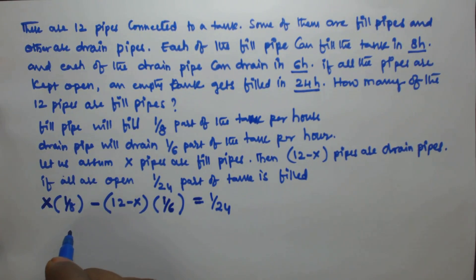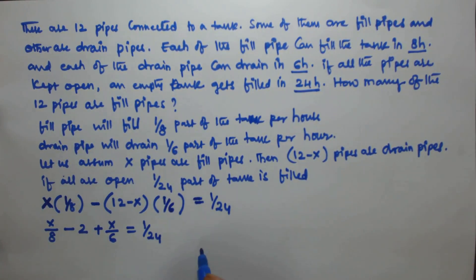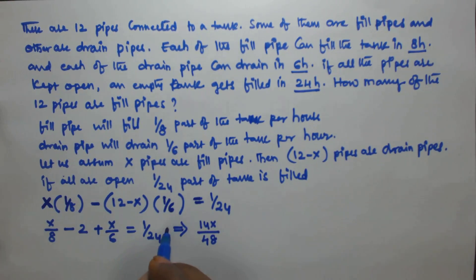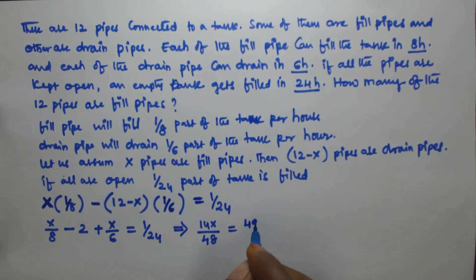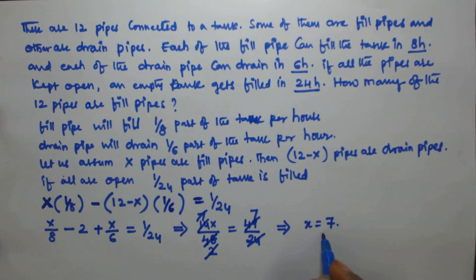Solving the equation: x/8 minus 12/6 plus x/6 equals 1/24. This gives x/8 plus x/6 equals 1/24 plus 2. Combining: 14x/48 equals 49/24. Simplifying, x equals 7. So the total number of fill pipes is 7.